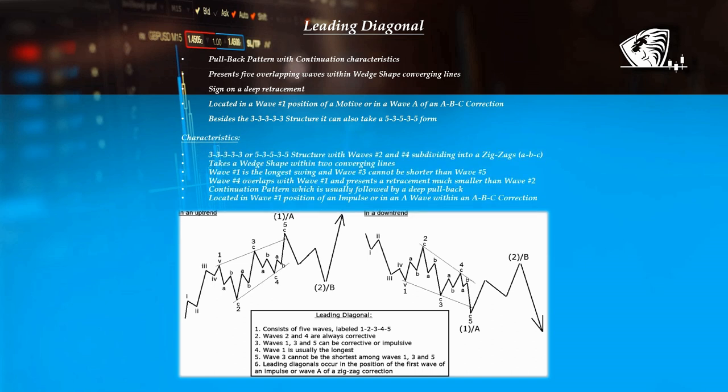Characteristics: 3-3-3-3-3 or 5-3-5-3-5 structure, with waves 2 and 4 subdividing into zigzags ABC. Takes a wedge shape within two converging lines. Wave 1 is the longest swing, and wave 3 cannot be shorter than wave 5. Wave 4 overlaps with wave 1 and presents a retracement much smaller than wave 2. Continuation pattern, which is usually followed by a deep pullback, located in the first wave position of an impulse or in an A wave within an ABC correction.